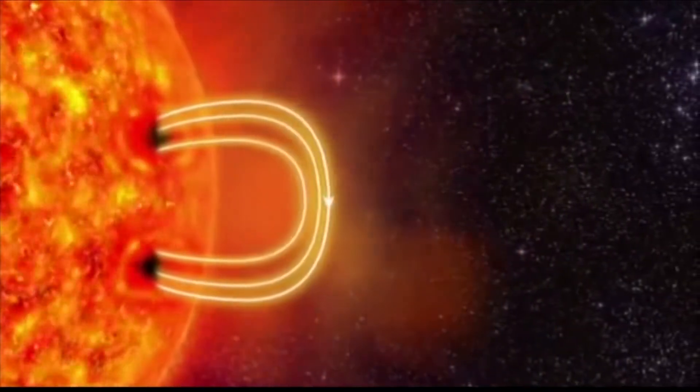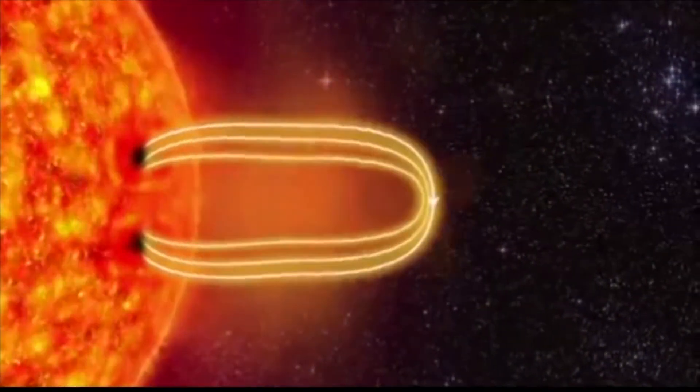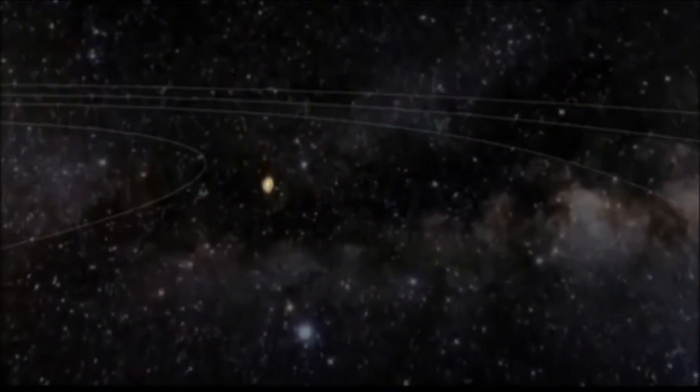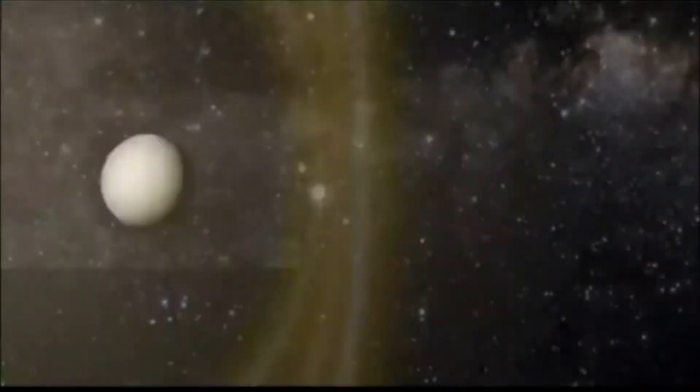Like a rubber band, the magnetic field stretches and twists and then it breaks, ejecting several billion tons of plasma into space. This is a solar storm and it can reach Earth in 18 hours.